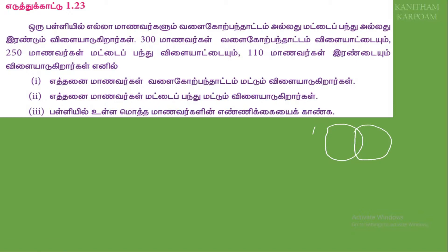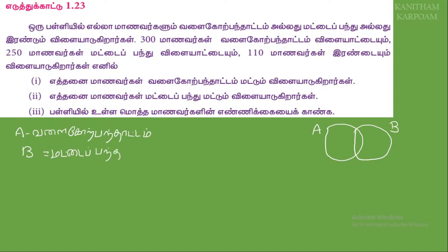We have a name called A and B. Now, we have three people in the game. A is the name of A. So, we have a name called B. A is the name of A. So, A is the name of B. A is the name of B.